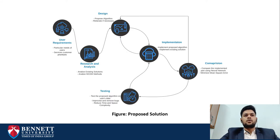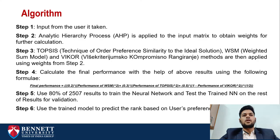First, the user requirements are taken into account and then passed through different MCDM methods. Finally, we apply our proposed algorithm to the dataset and, after its implementation, we compare it through the different MCDM methods and provide an output as the best CSP. Custom Cloud's algorithm — Step 1: input is taken from the user. Step 2: AHP is applied to the input metrics to obtain weights for further calculation. Step 3: TOPSIS, WSM, and WICON methods are then applied using the weights from step 2. Step 4: calculate the final performance with the help of the following formula.